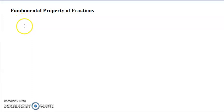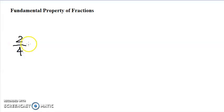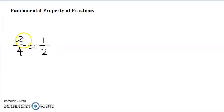So for example, we know that if we have a fraction, let's say 2 over 4, we can reduce this to 1 over 2, because we can see that 2 and 4 have 2 in common. We can divide both of them — top and bottom — by 2. So 2 divided by 2 is 1, and 4 divided by 2 is 2.